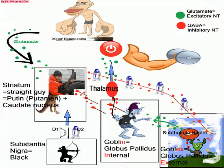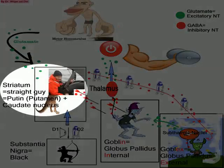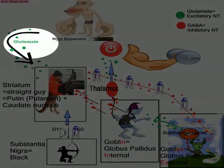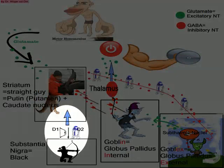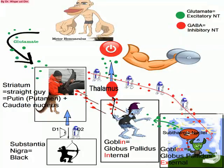Now for the physiology: the motor cortex excites the striatum through glutamate. The green dots represent the excitatory neurotransmitter glutamate, and the red dots represent the inhibitory neurotransmitter GABA. Also remember that dopamine works via the nigrostriatal pathway, one of the four dopaminergic pathways.